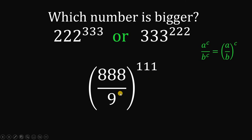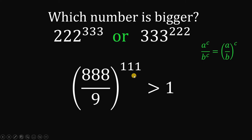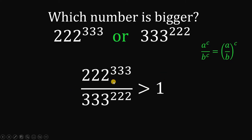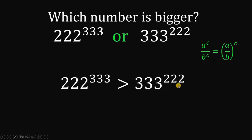Now, 888 over 9 is definitely greater than 1. So a number greater than 1 raised to a huge exponent is still greater than 1. Since the left-hand side is equivalent to the first number over the second number, we can conclude that 222 raised to 333 must be greater than 333 raised to 222. Our answer is 222 raised to 333, and that's our justification. And as always, we are done.